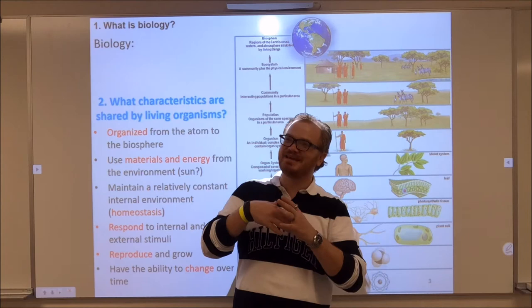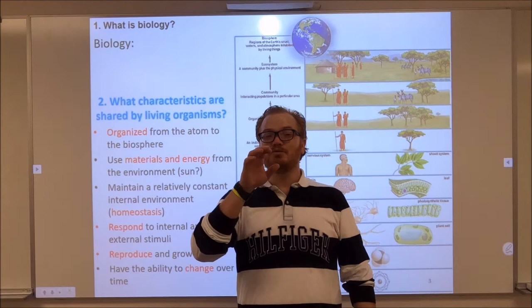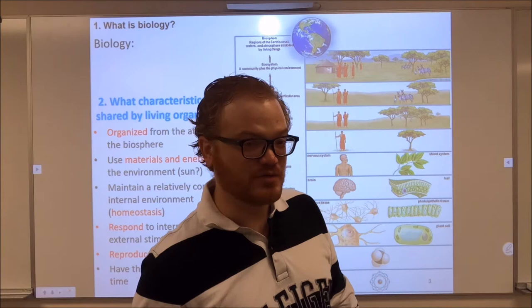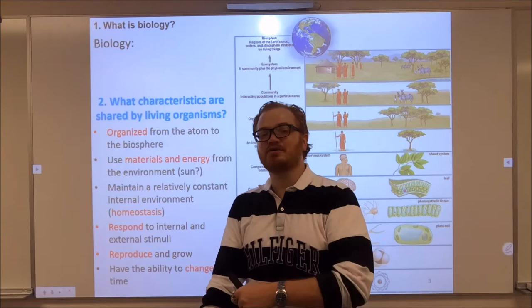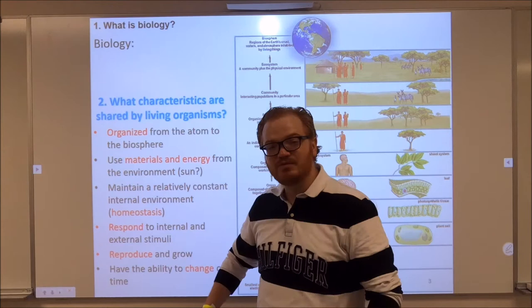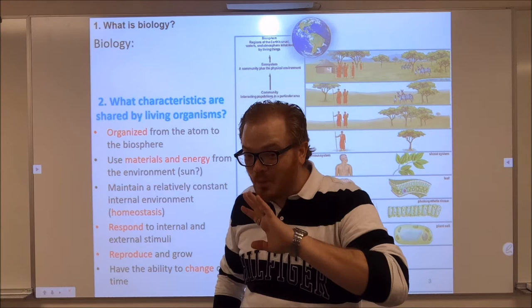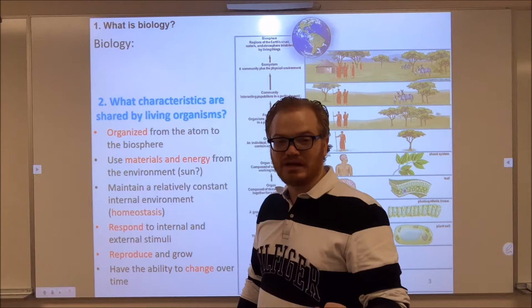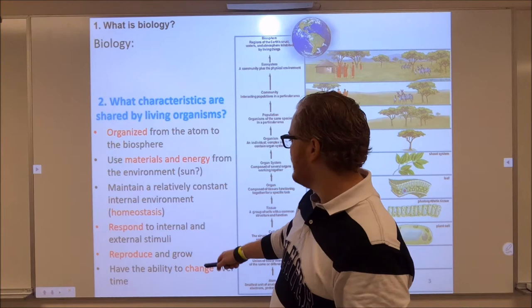We must maintain a relatively constant internal environment — that's a simple way of saying we must be homeostatically balanced. We must maintain homeostasis in order to survive. Your core body temperature is probably around 98.6 degrees. In fact, most of us have had to walk through a temperature scanner in the last few months. If your temperature goes up too high or down too low, that could be very detrimental — you could die.